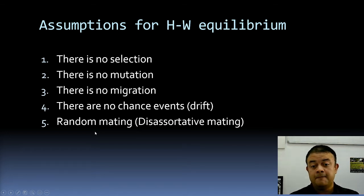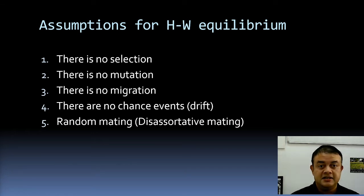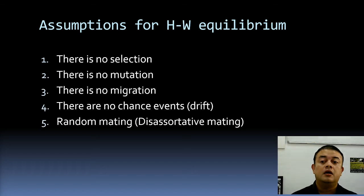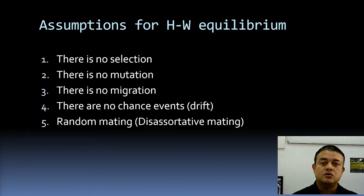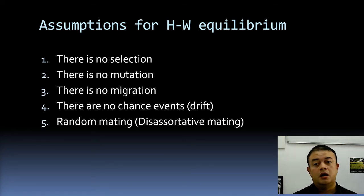The first four assumptions are more important than the fifth — random mating. Does random mating change allele frequencies in the whole population? Not really. But non-random mating means some individuals prefer to mate with others having certain phenotypes. After generations, lineage splitting can happen. In a strict sense, random mating doesn't change the equilibrium, but it's still an important assumption.